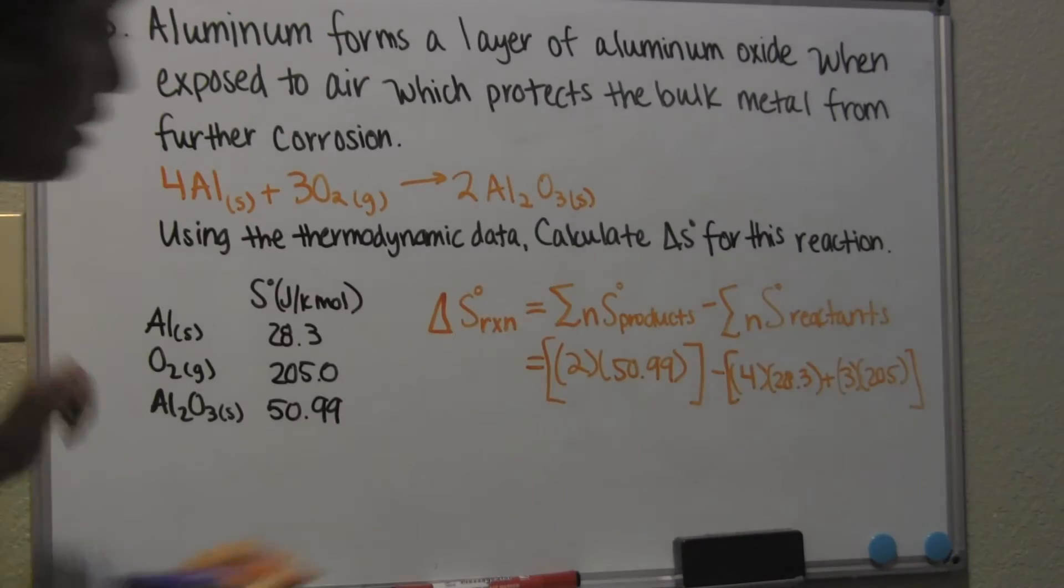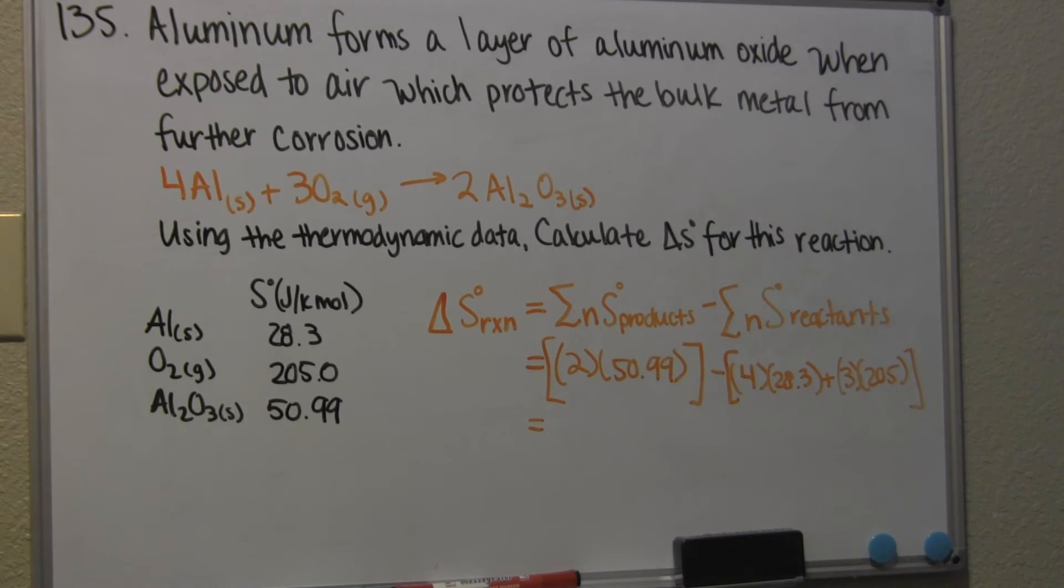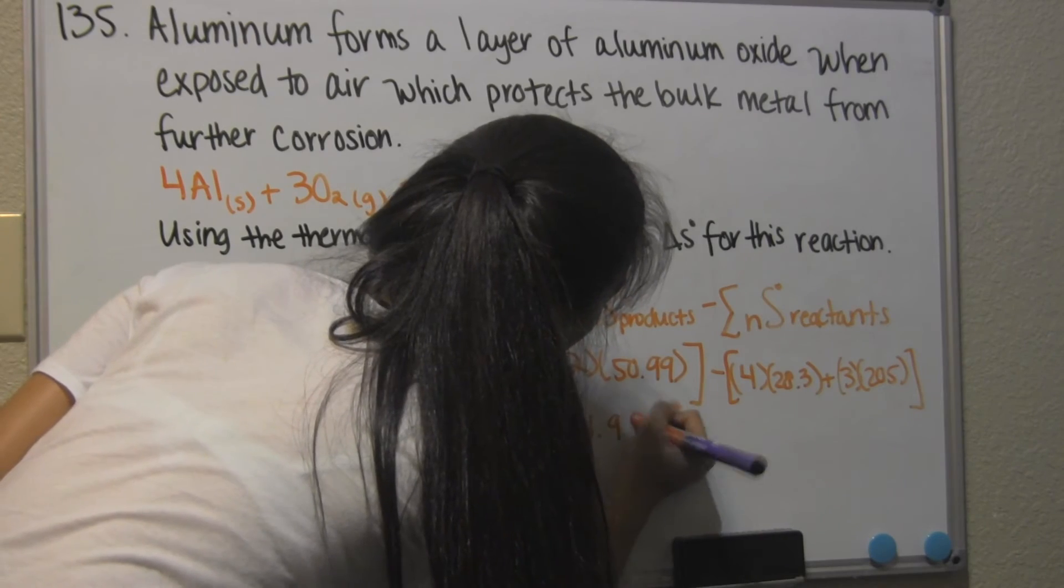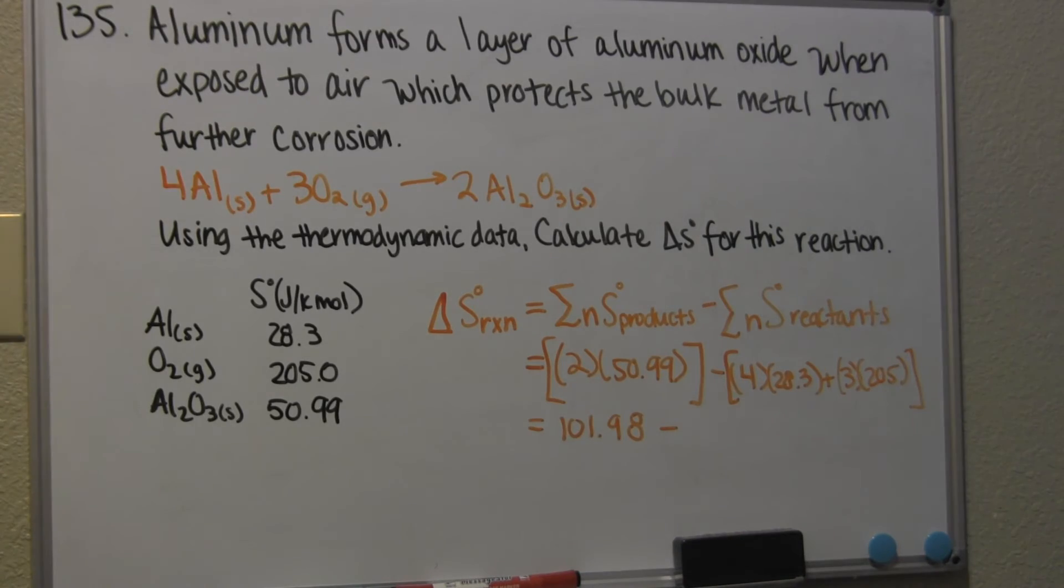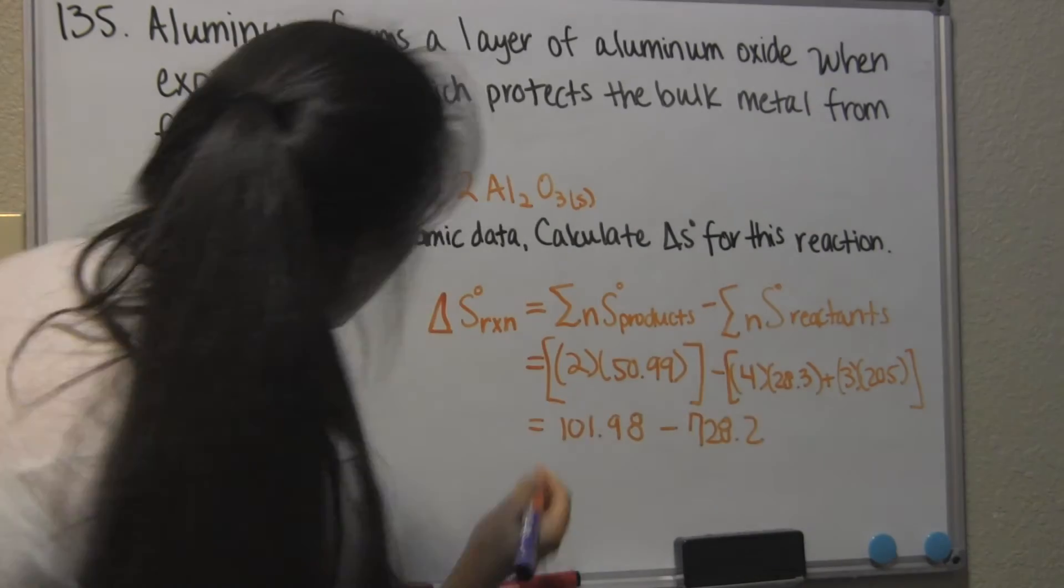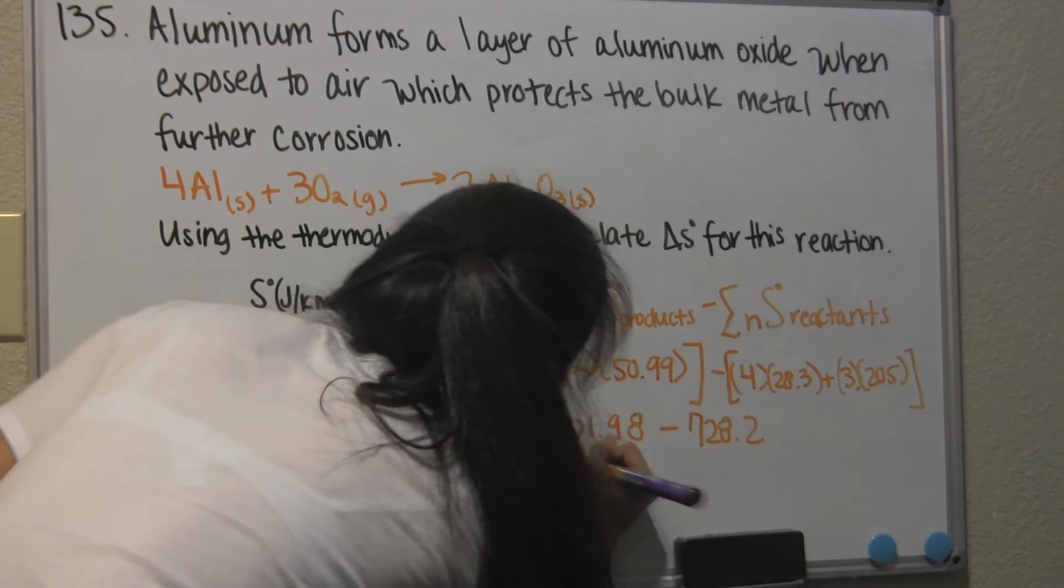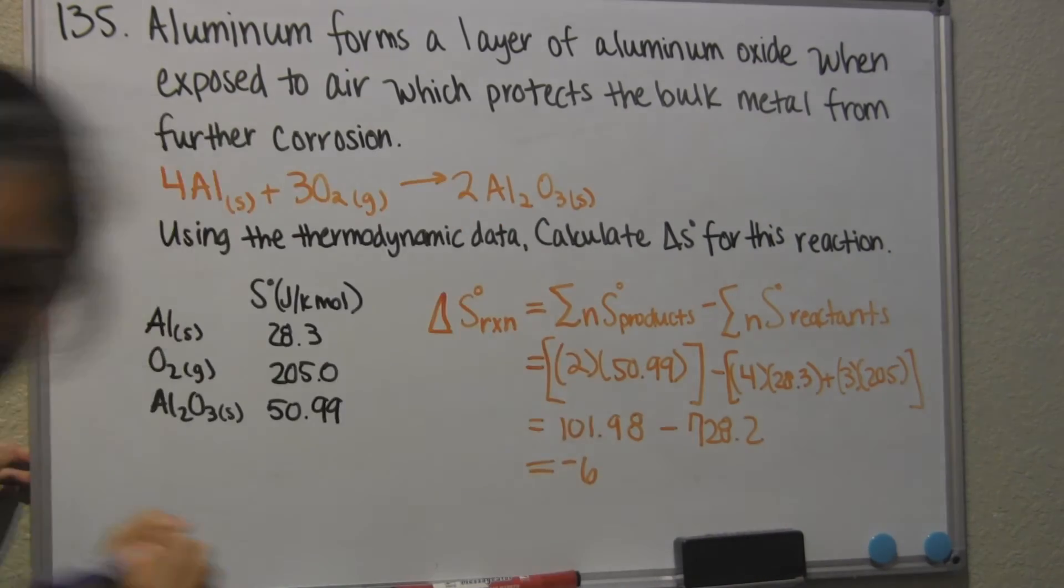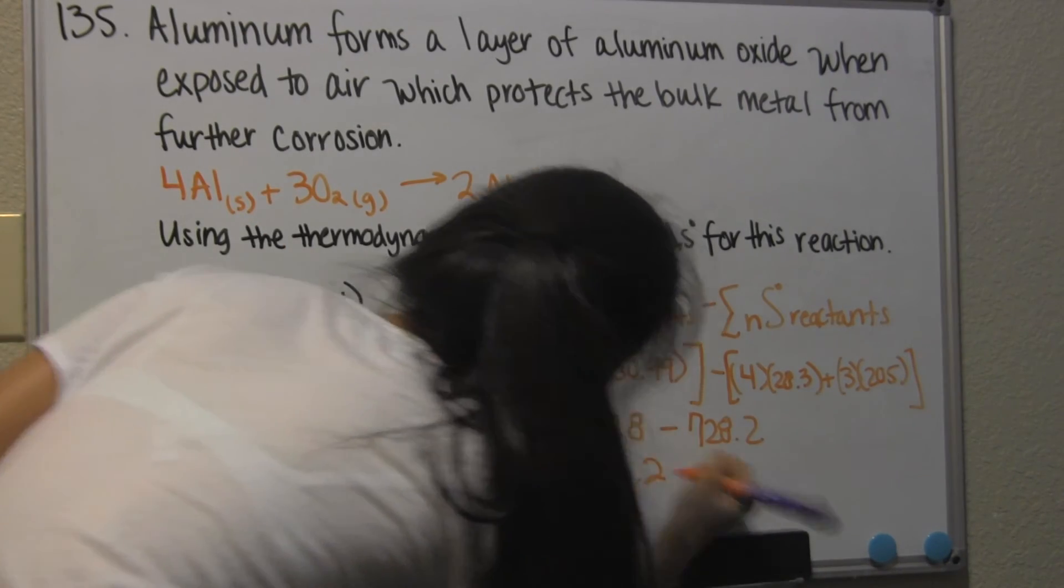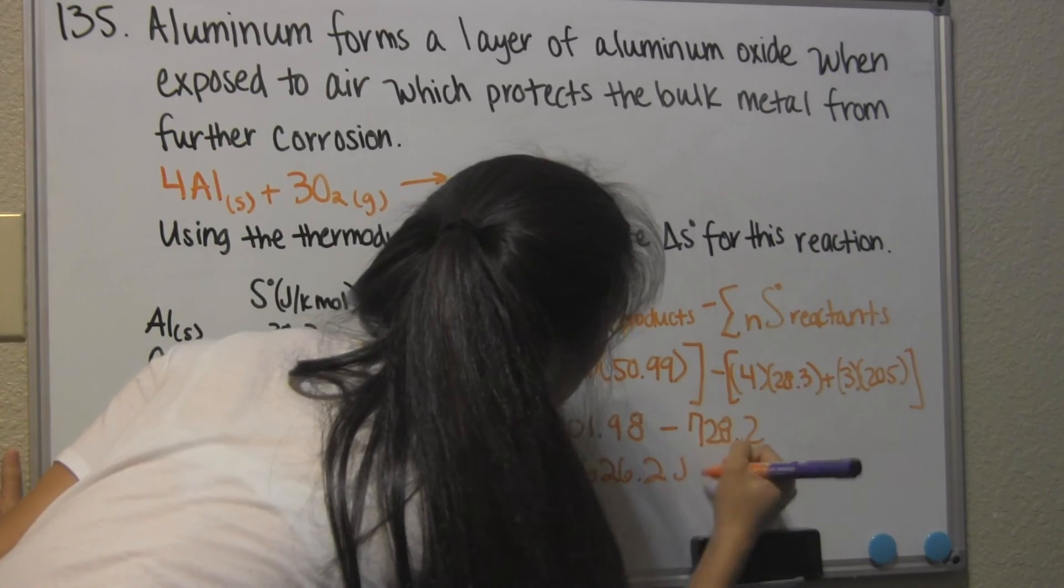And when you multiply these and multiply these, you get 101.98 minus 728.2. And that makes negative 626.2 joules per Kelvin.